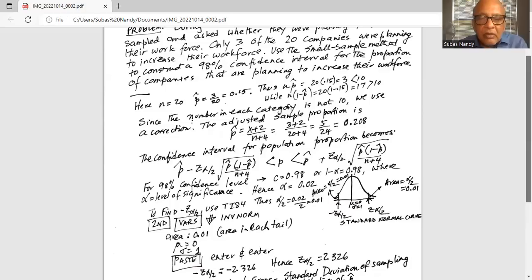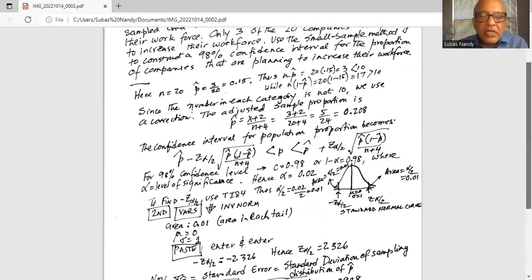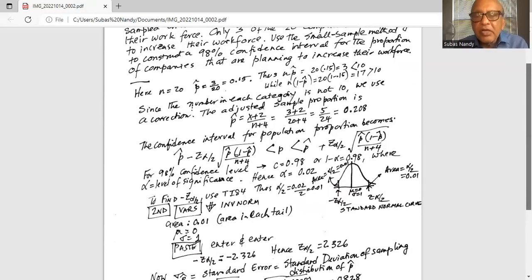While the unshaded region in the center is where the population proportion will fall. Next we need to find out the critical values of z which separate the most probable region in the center from the least probable region in the tails.